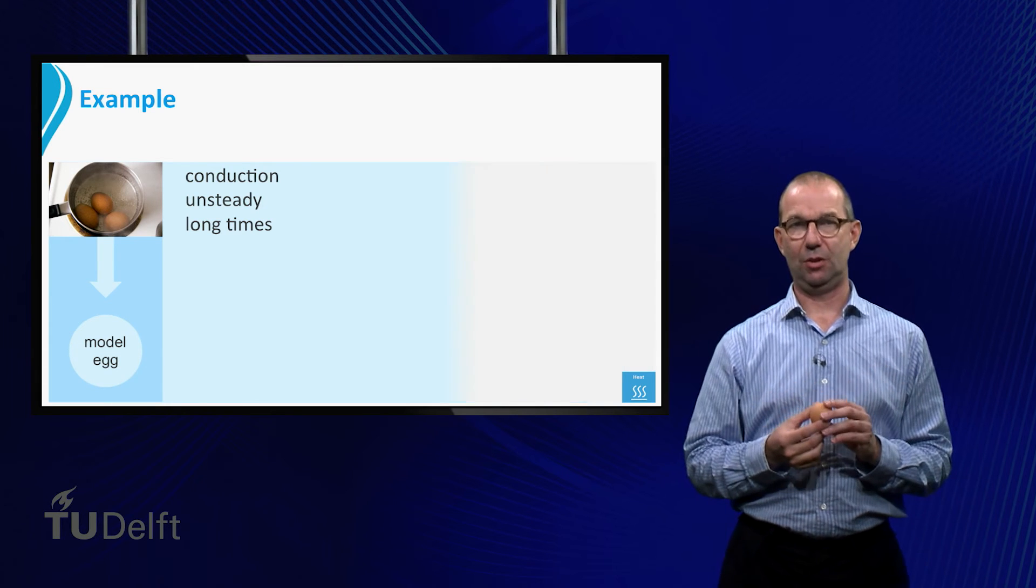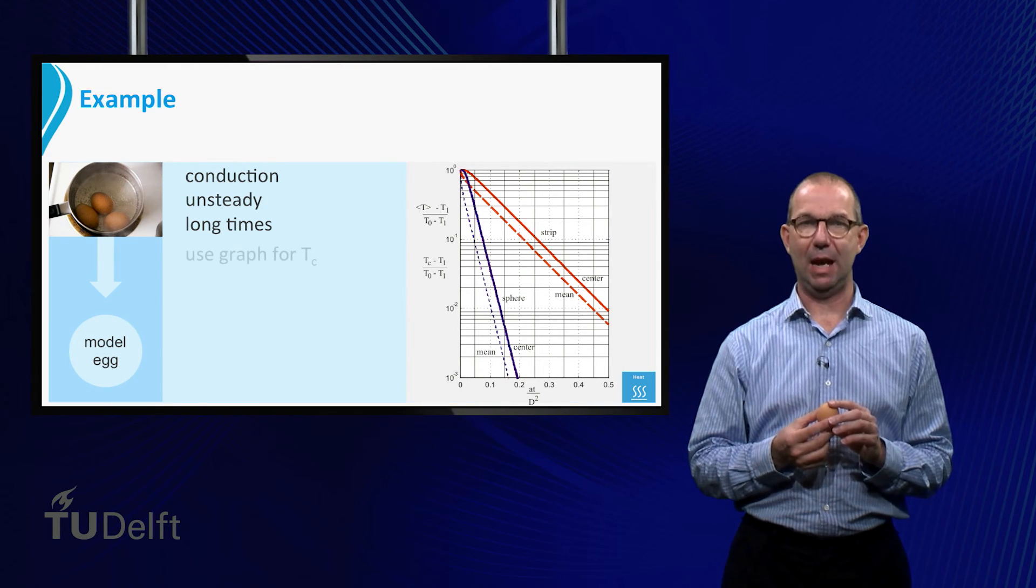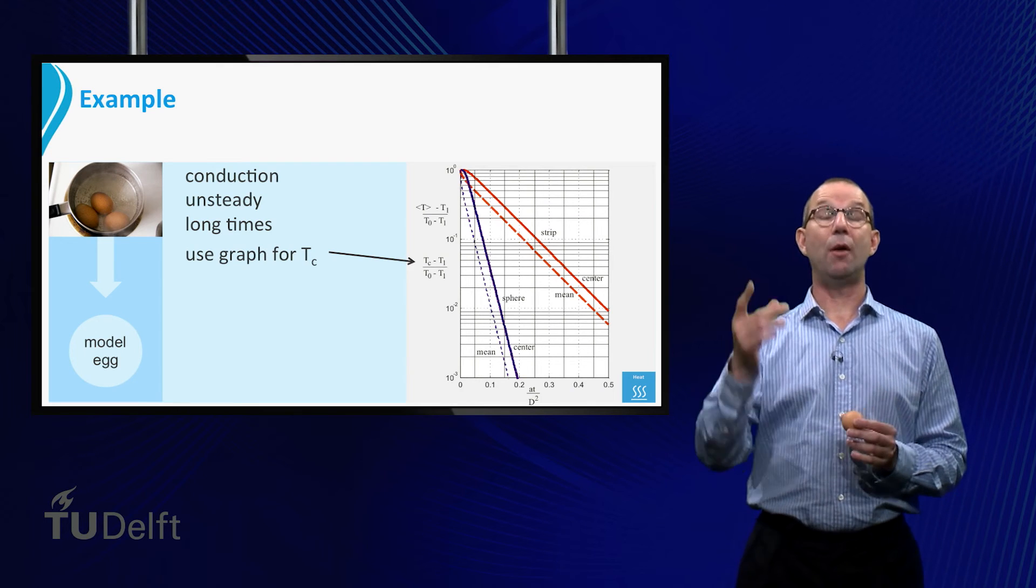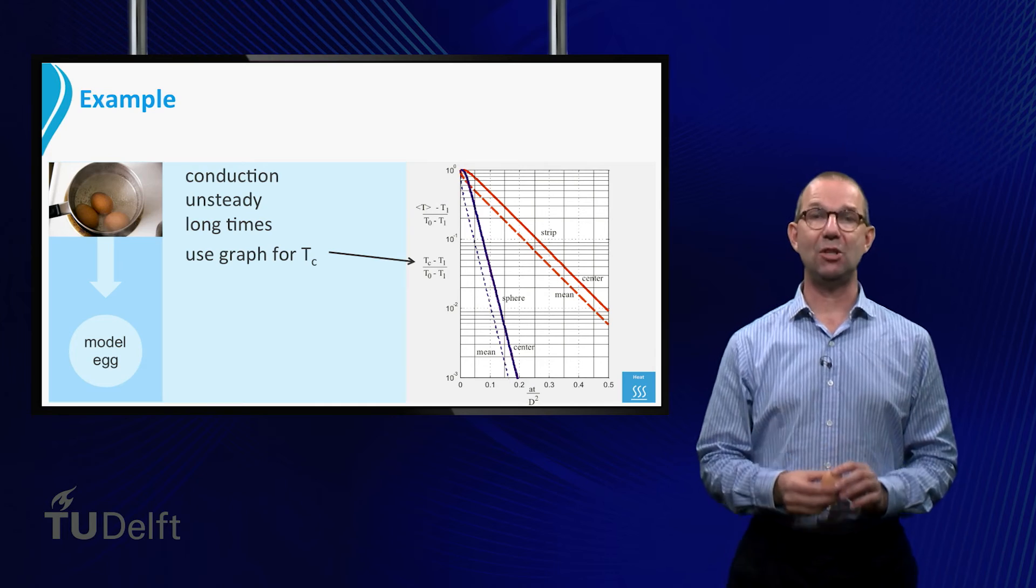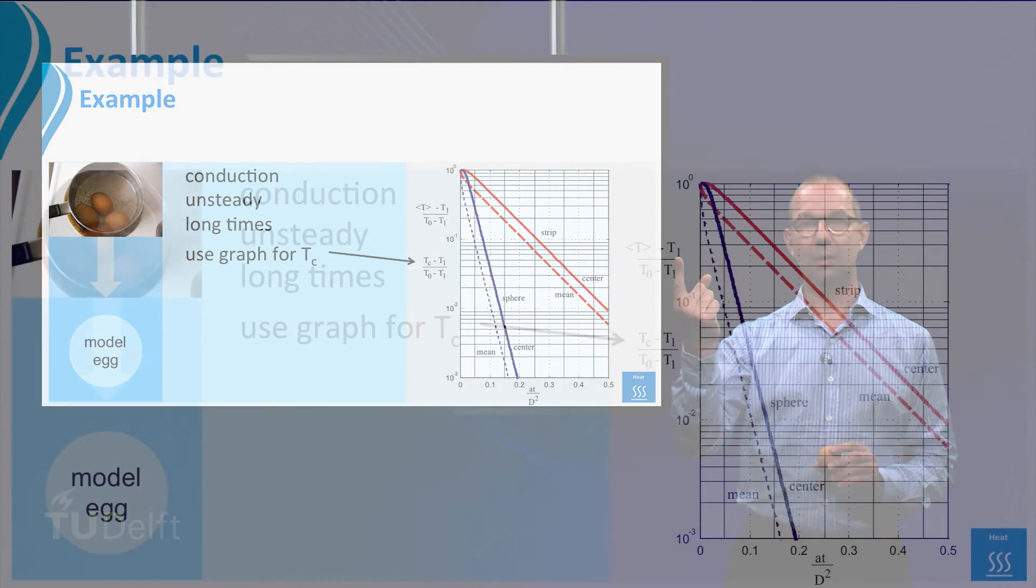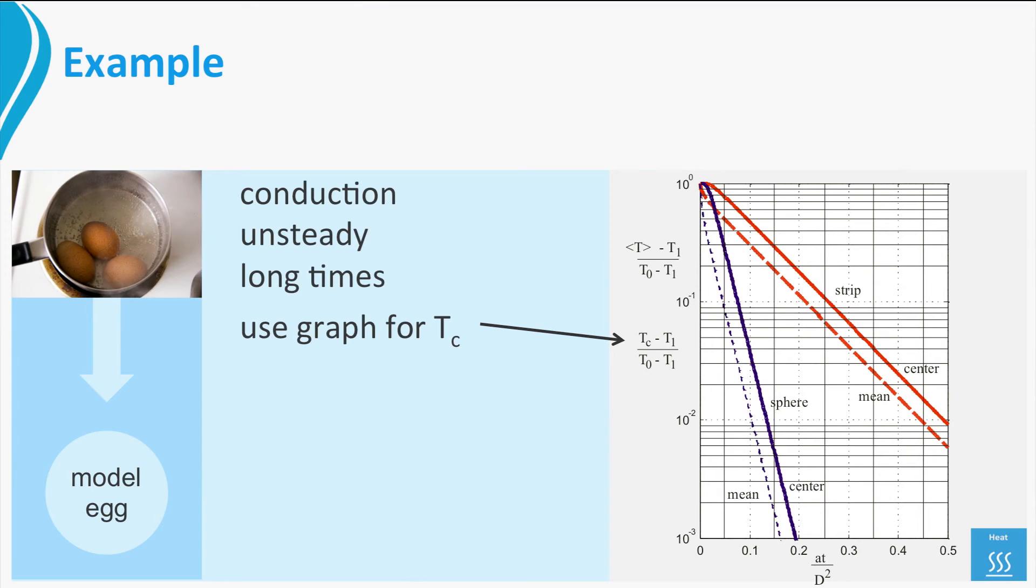Obviously, the last point to heat up in the egg is its center. Thus we can use the graph for T center. First we compute the dimensionless temperature of the center. That is Tc minus T1 divided by T0 minus T1. Putting in the numbers, with T1 the temperature of the egg shell, that is 100 degrees of boiling water, we find the value of 0.44. Then we read in the graph the full blue line and find for the Fourier number 0.035.